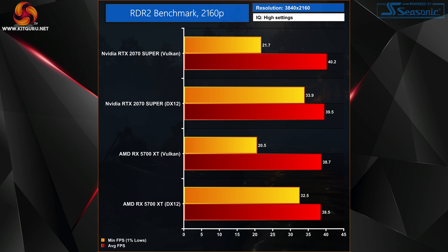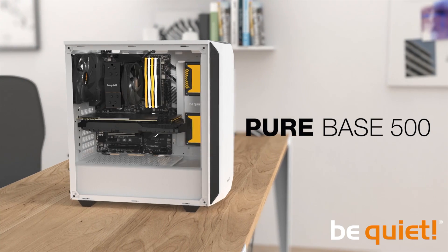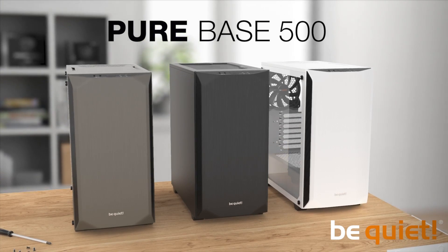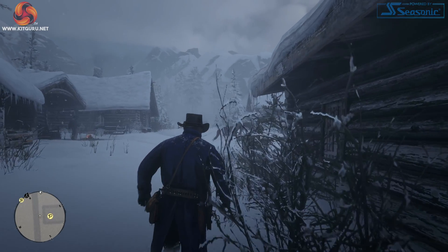At 4K, still using the in-game benchmark, neither card runs particularly well, but there is very little difference between the two APIs in terms of average frame rates. Vulkan again suffers with its one percent lows, which drop to around 20 fps for both cards.